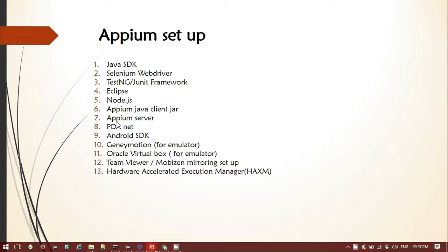Android SDK — if you want to go with Android automation testing you should have the Android SDK installed on your local machine. Apart from that, we will be using Genymotion for the emulator, and for Genymotion users you will need one more software, Oracle VirtualBox, which needs to be installed so that Genymotion can run smoothly. If you want a real device, you should have TeamViewer or Mobizen mirroring — whichever is preferred — installed on the machine.